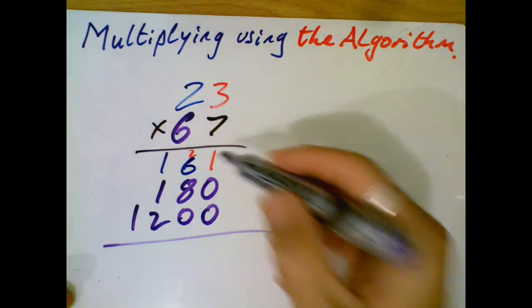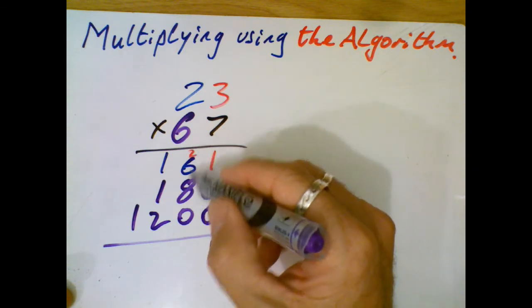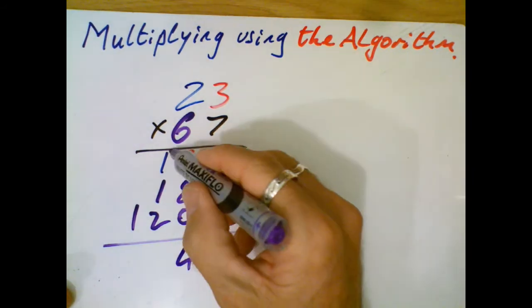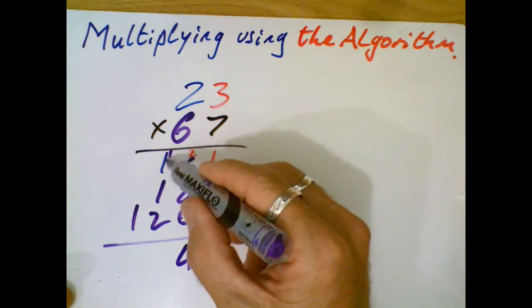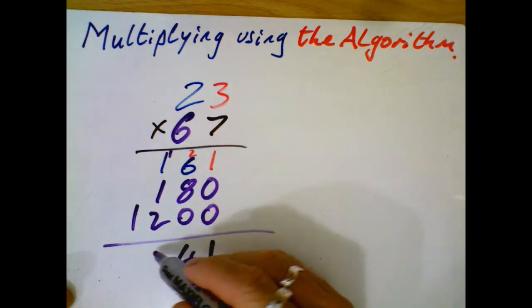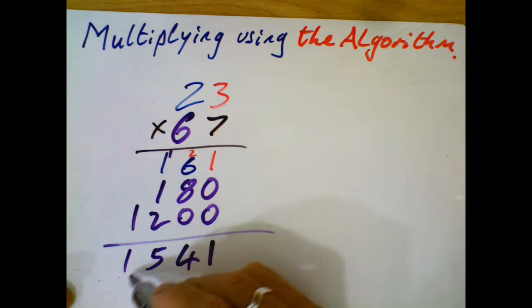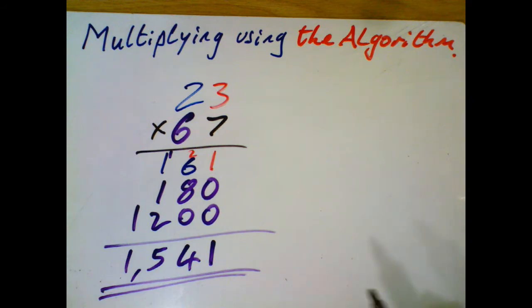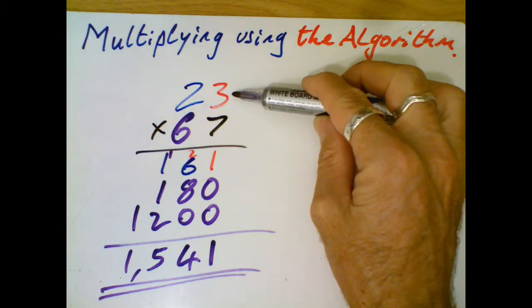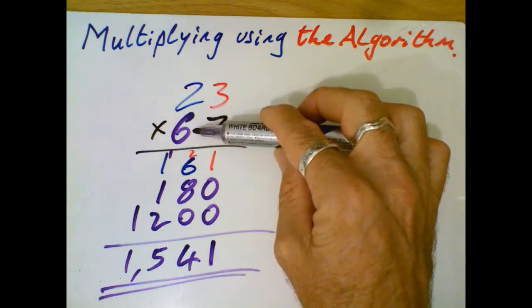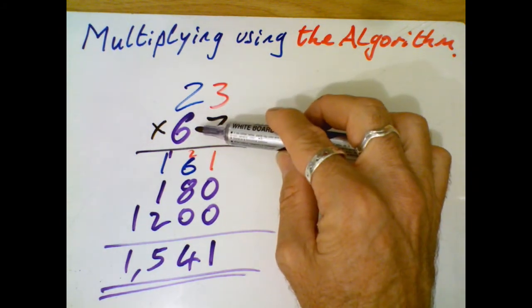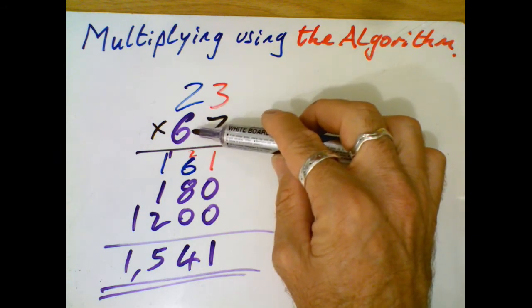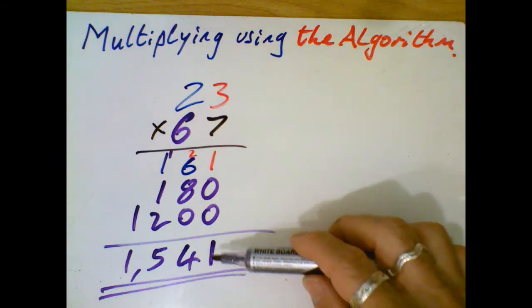Add these all up together. I got 1. I got 6 and 8, 14. 1 over there. 2, 3, 4, 5. And 1 there. My answer is 1,541. We could say that's 25. We could say that's 60. Let's say 6 times 25 would be 150. So 60 times 25 would be 1,500. So we're pretty close. That must be right. Yeah.